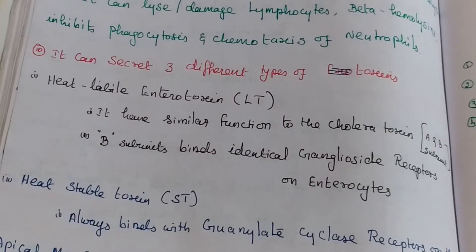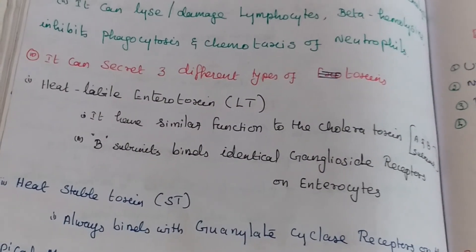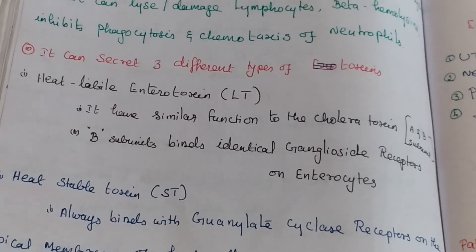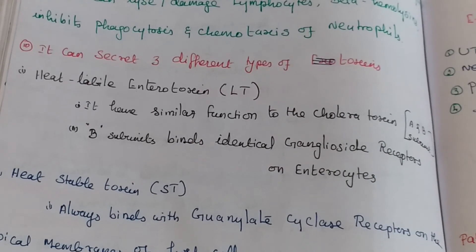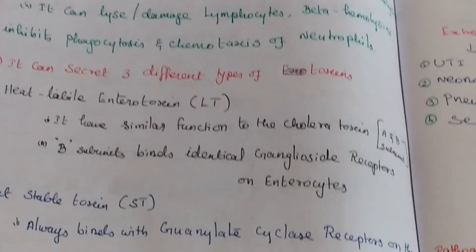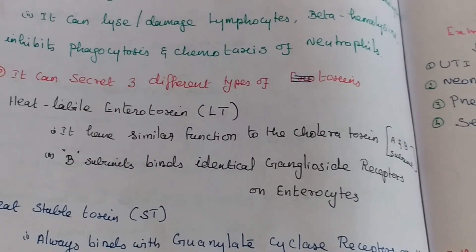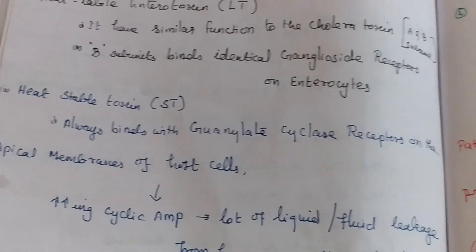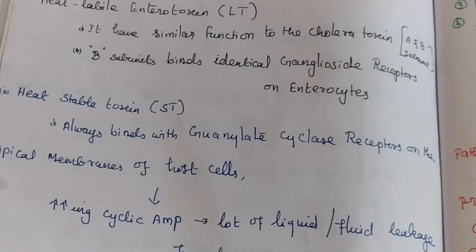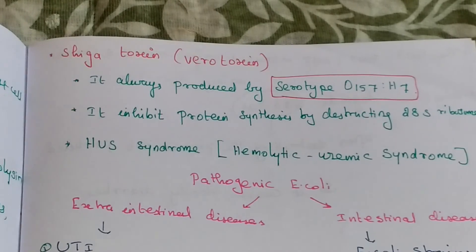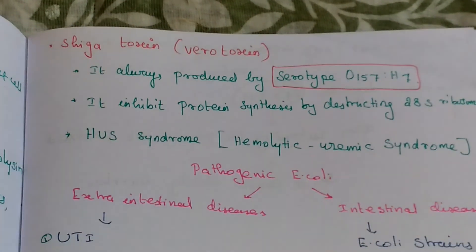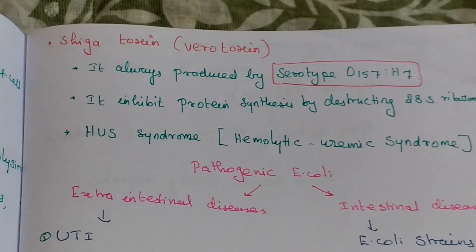To summarize the three toxins: heat-labile toxin binds with the ganglioside receptor; heat-stable toxin binds with the guanylate cyclase receptor; Shiga toxin (verotoxin) is secreted by O157:H7 serotype and inhibits protein synthesis.